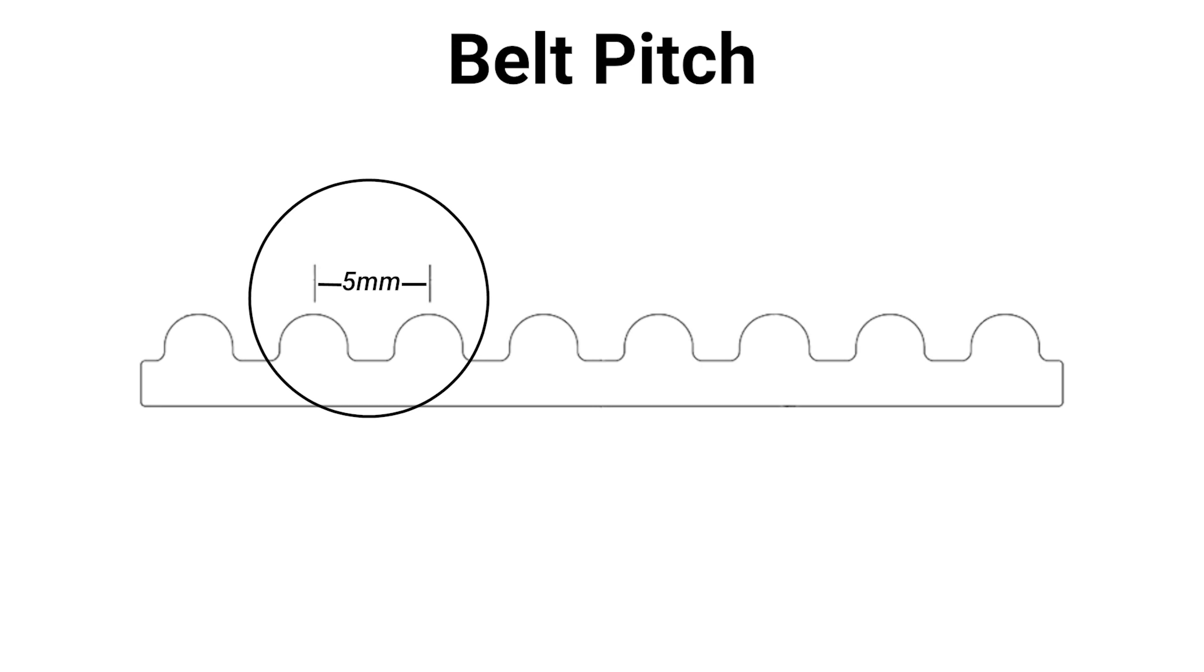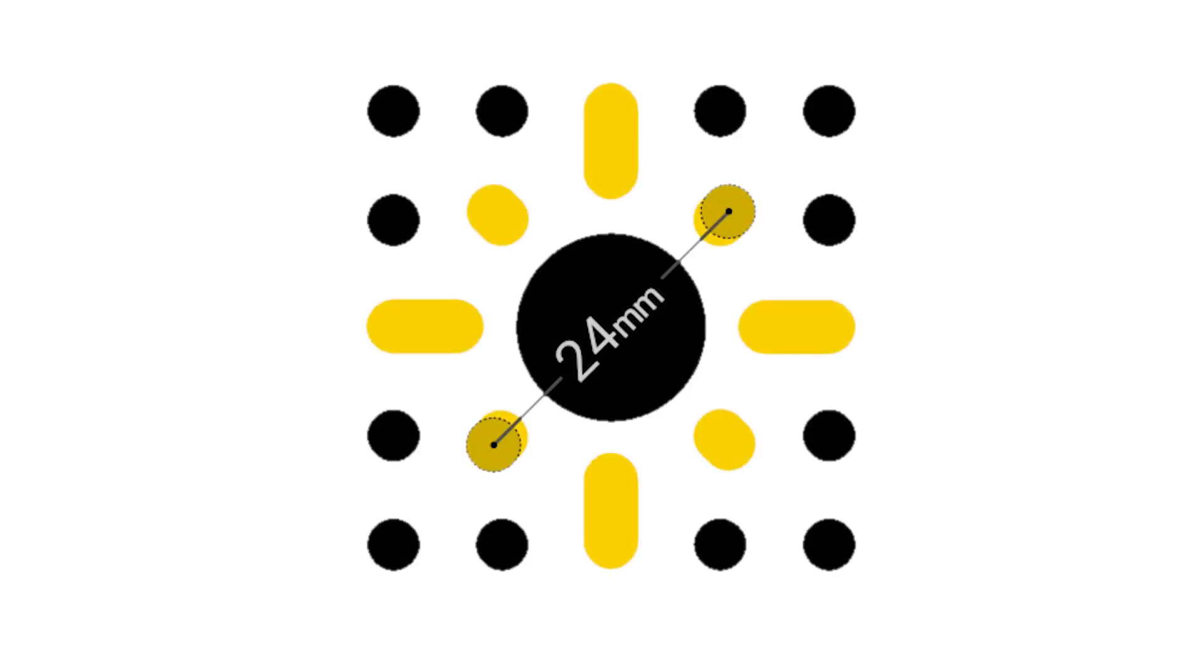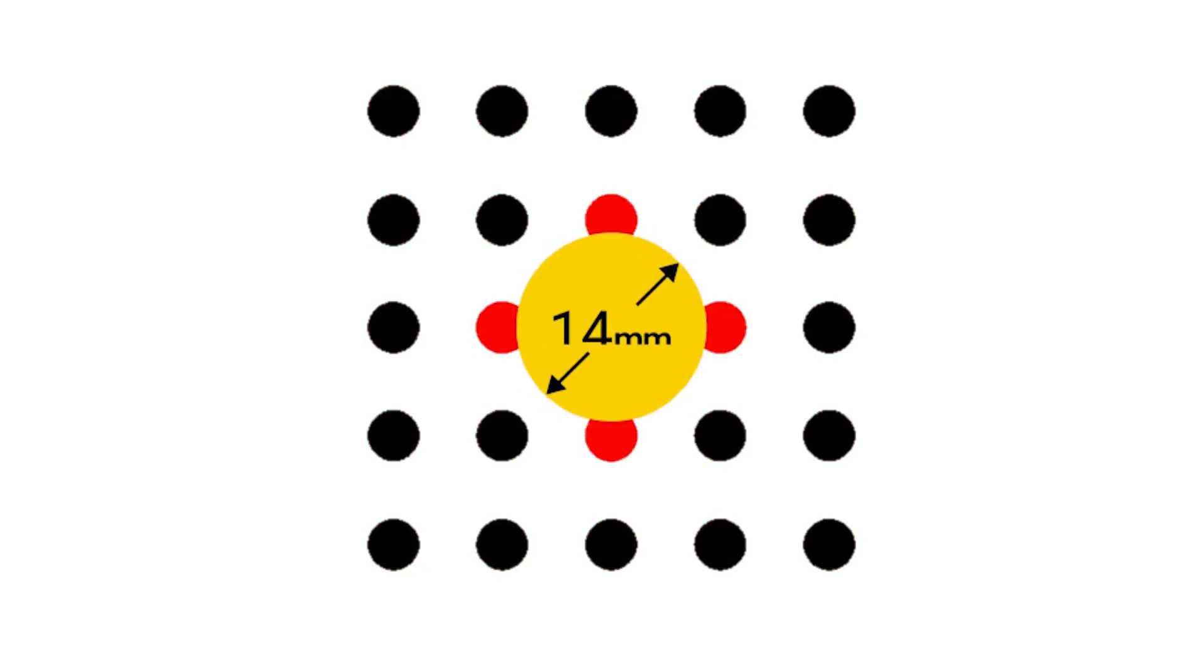In this case we're going to be working with five millimeter pitch belts and the pulleys that go alongside that. So with the GoBuilder pattern a lot of our belt lengths are going to be picked around the 24 millimeter center to center distance between any of the repetitions of the GoBuilder pattern and most importantly the 14 millimeter holes here.